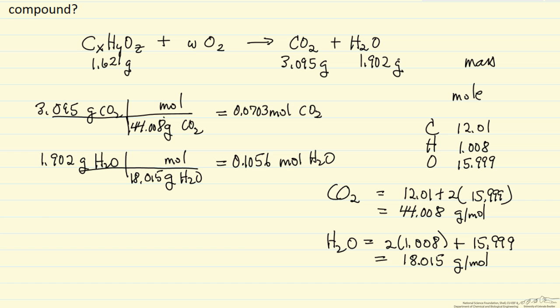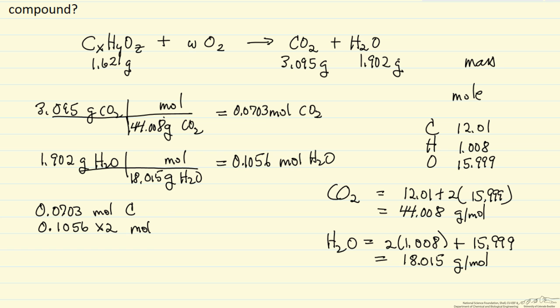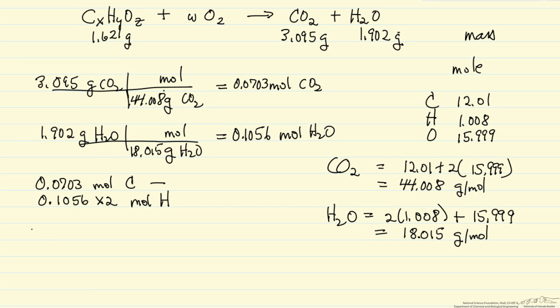This means that in my starting compound it had 0.0703 moles of carbon, and it means in the starting compound it had 0.1056 times 2 moles of hydrogen, because there's 2 moles of hydrogen atoms for every mole of water. So the number of moles of carbon and number of moles of hydrogen I can use to then determine the mass, so I want the mass so I can determine the mass of oxygen. So 0.0703 moles of carbon times 12.01 grams of carbon per mole of carbon, units cancel, so this is the grams of carbon in that unknown compound.